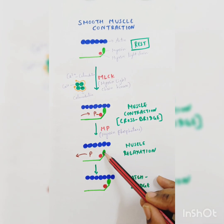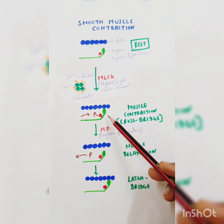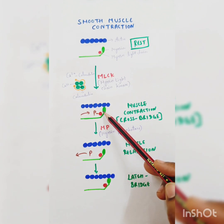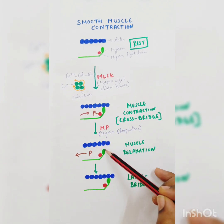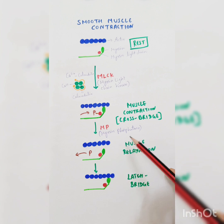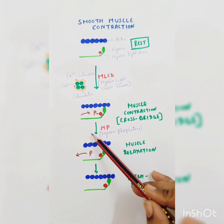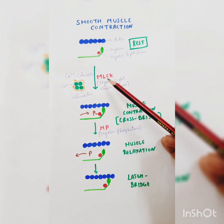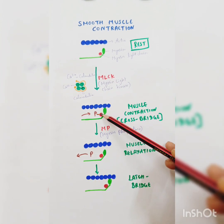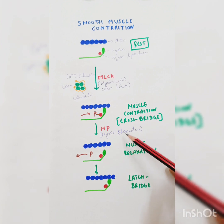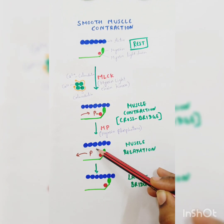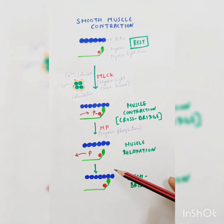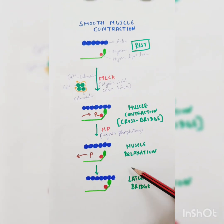There is a detachment of the cross-bridge. Initially, a cross-bridge was formed; now it's detached and the muscle relaxes. This happens when calcium concentration is very low. There are two enzymes: myosin light chain kinase is required for phosphorylation, and myosin phosphatase is required for dephosphorylation. Now there is a mechanism called latch bridge mechanism.